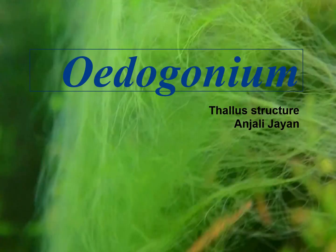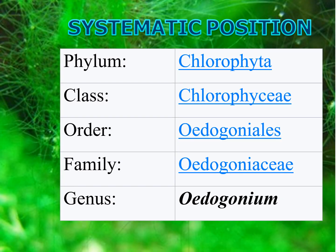In this video, we are discussing about thallus organization in Oedogonium. Systematic position of the genus Oedogonium: Phylum Chlorophyta, Class Chlorophyceae, Order Oedogoniales, Family Oedogoniaceae. The class Chlorophyceae is known as green algae, hence Oedogonium is a green algae.